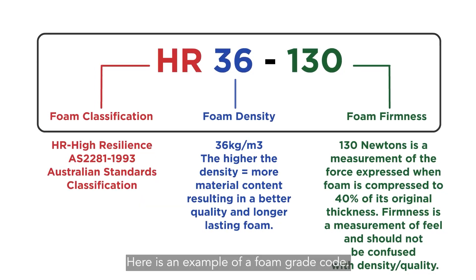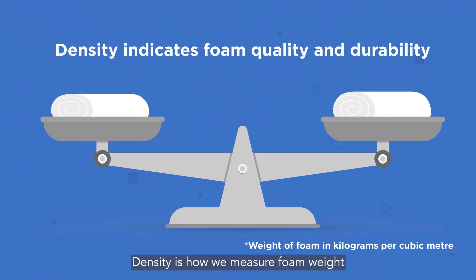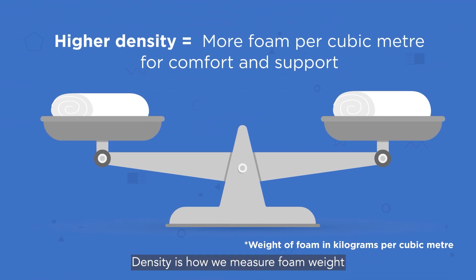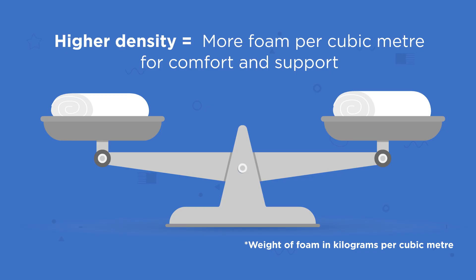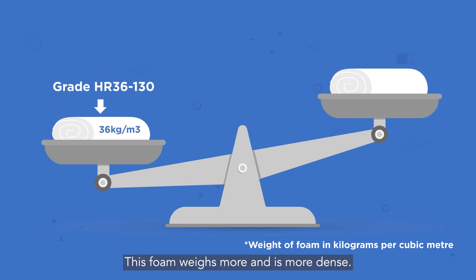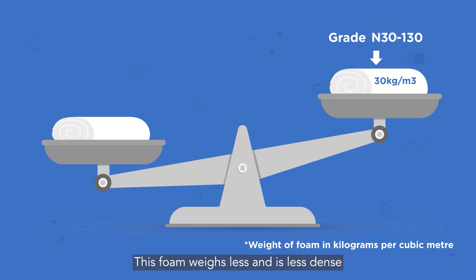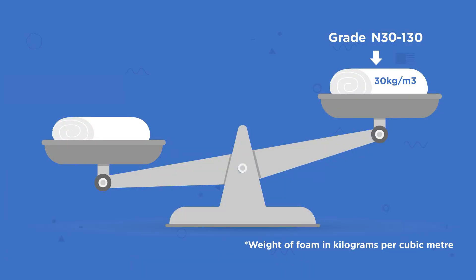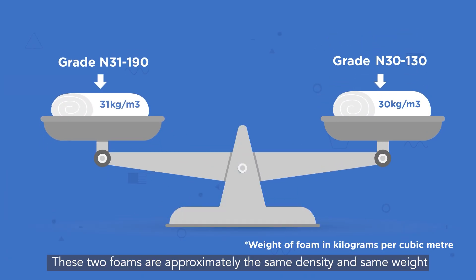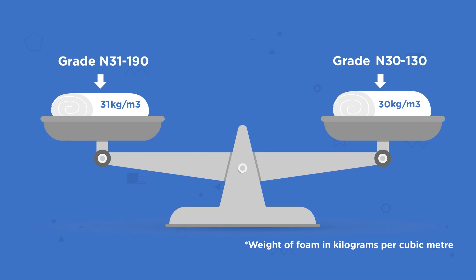Here is an example foam grade. Density is how we measure foam weight. This foam weighs more and is more dense. This foam weighs less and is less dense. These two foams are approximately the same density and same weight.